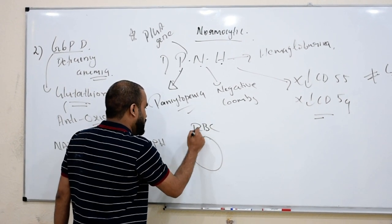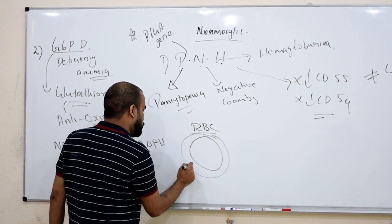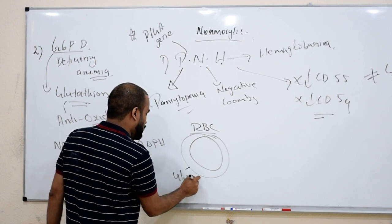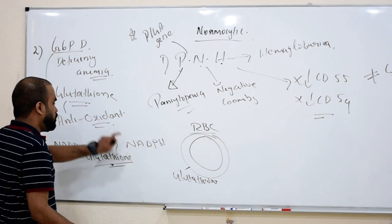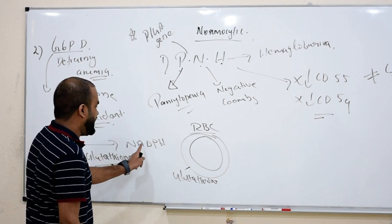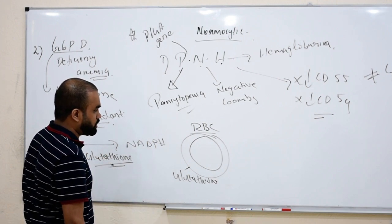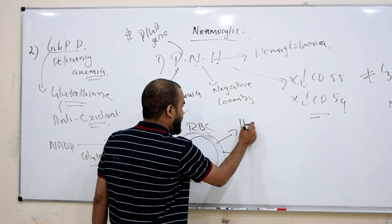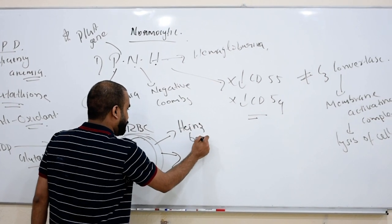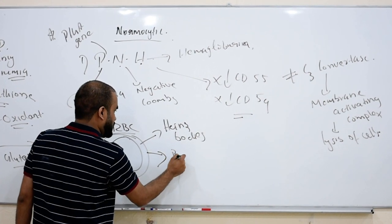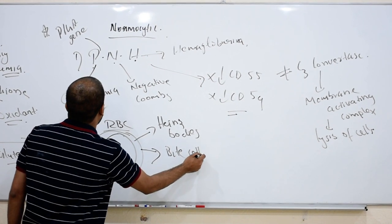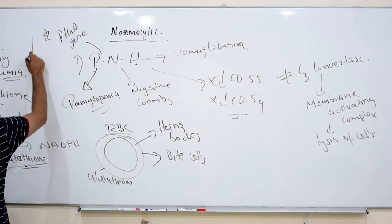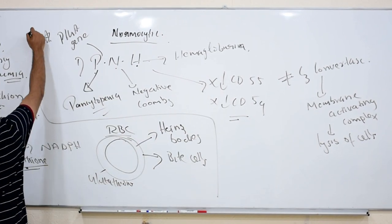There are some babies who are born without G6PD, so no NADPH. Actually RBC is protected by what? Glutathione. Protection is by glutathione, reduced glutathione. But in babies who are born without G6PD, no glutathione, so no NADPH, so no reduced glutathione, so they will have lysis of RBC. And two types of bodies you see here: Heinz bodies and bite cells.